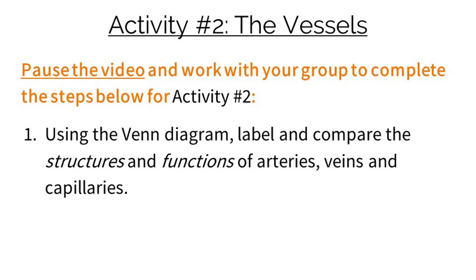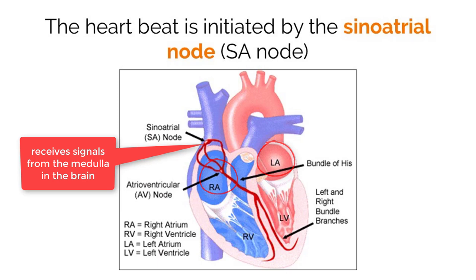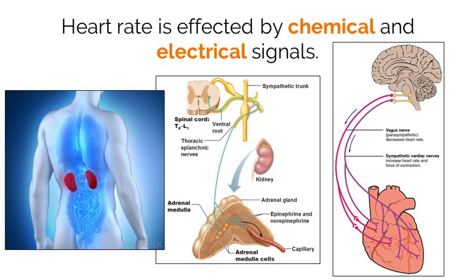The heartbeat is controlled by structures called the sinoatrial node and atrioventricular node. The SA node receives electrical signals from the brain that begin the contractions of both atria. Shortly after, the signal moves to the AV node, which initiates the contractions of both ventricles. This two-part delayed contraction gives the heart its signature lub-dub sound as valves are closing.